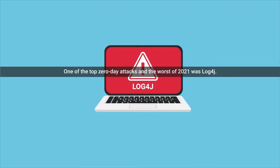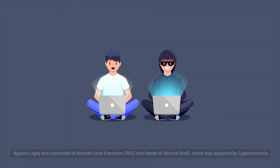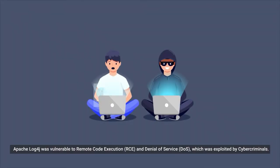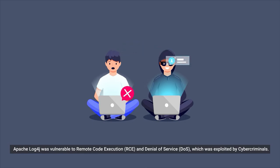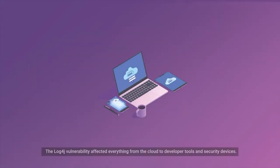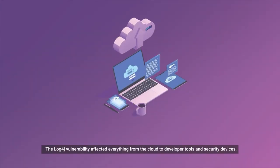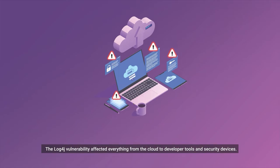One of the top zero-day attacks and the worst of 2021 was Log4j. Apache Log4j was vulnerable to Remote Code Execution and Denial of Service, which was exploited by cyber criminals. The Log4j vulnerability affected everything from the cloud to developer tools and security devices.